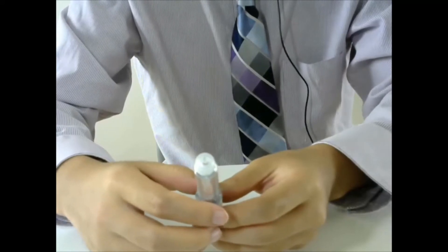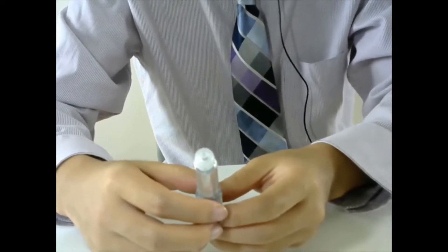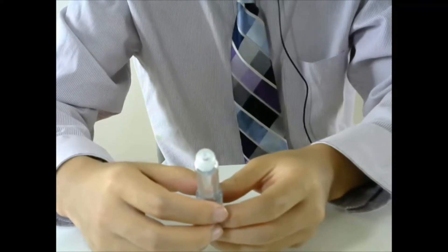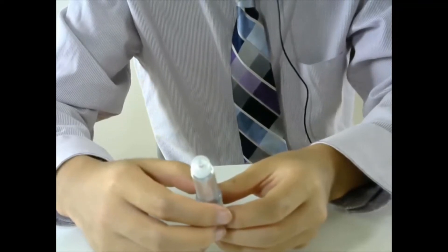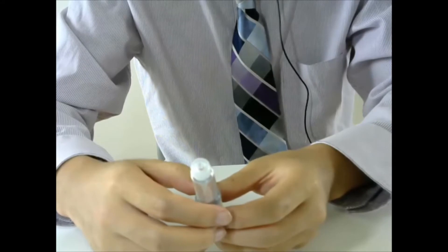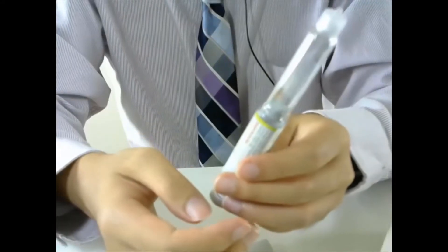The next step is to prime the pen. When I say prime, I mean to squeeze the air out of the pen so you don't inject air into your muscle. The way we prime the pen is by dialing the pen to 2 units.